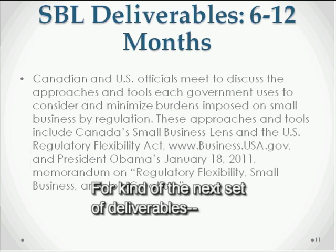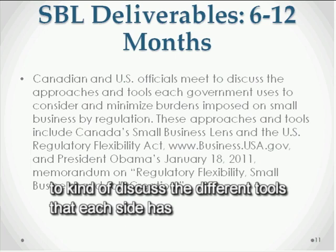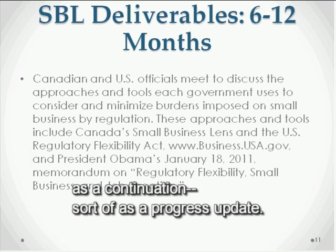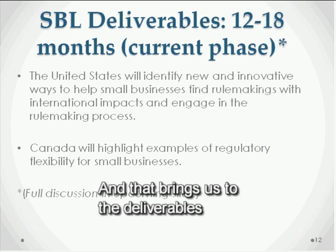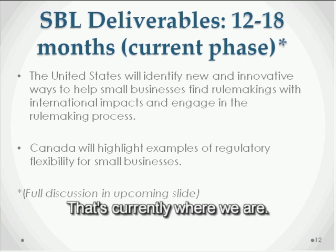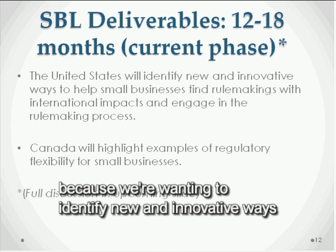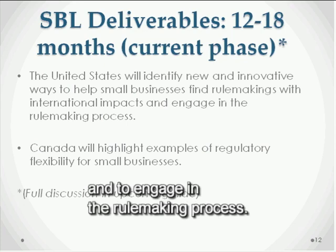For the next set of deliverables, Canadian and U.S. officials met once to discuss the different tools each side has and is developing, and then met again as a progress update. That brings us to the deliverables at 12 to 18 months, which is currently where we are. This is why we're having the webinar — we want to identify new and innovative ways to help small businesses find rulemakings with international impacts and engage in the rulemaking process.